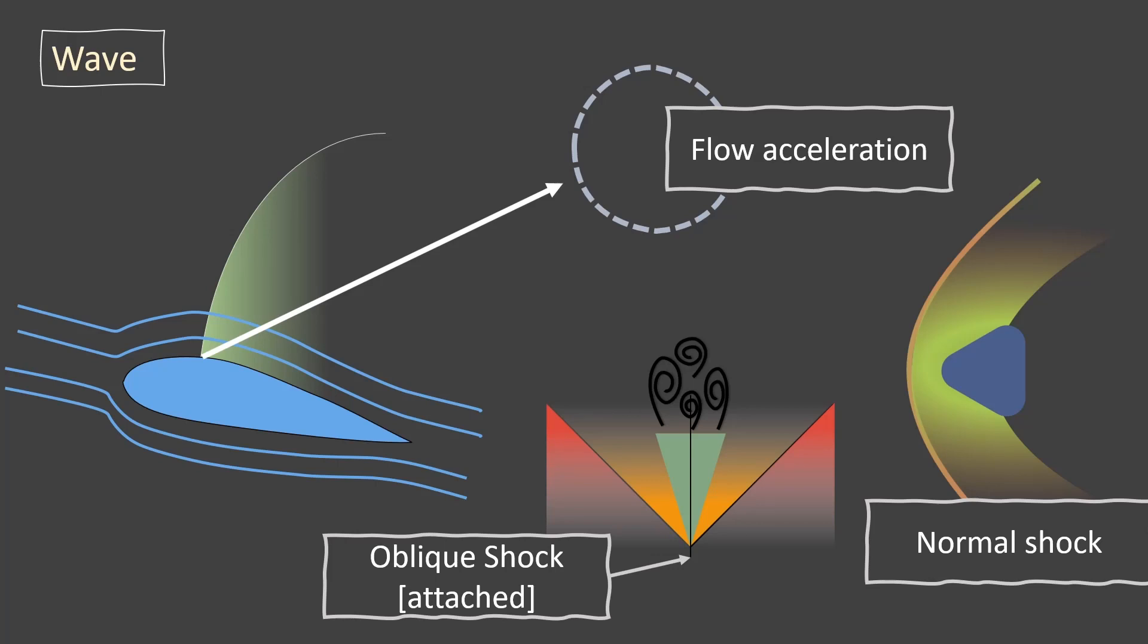If the velocity of the flow reaches a sonic or transonic condition, a shock wave is produced. It can be oblique shock or normal shock and there will be a sudden increase in drag due to the shock. The sudden increase in drag due to the shock is called wave drag.